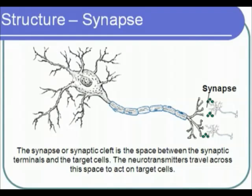The synapse or synaptic cleft is a space between the axon terminal and the target neuron. After being released by the axon terminal, neurotransmitters travel across the synapse in order to act on target neurons. This concludes this video on the structure and function of the neuron.